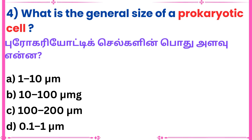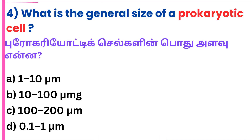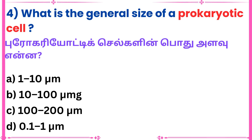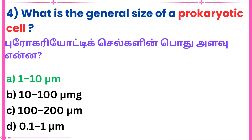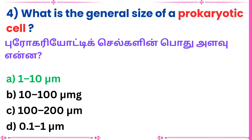Fourth question: What is the general size of a prokaryotic cell? Answer: 1 to 10 micrometers.